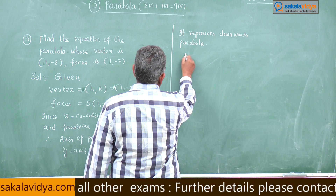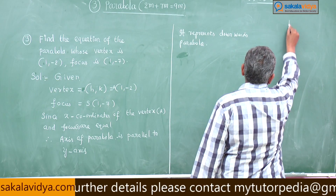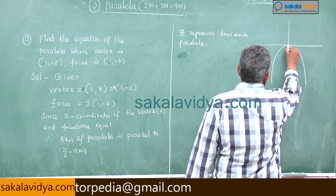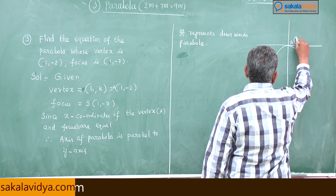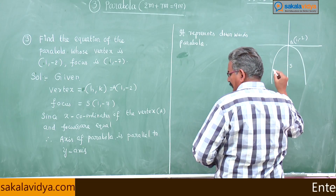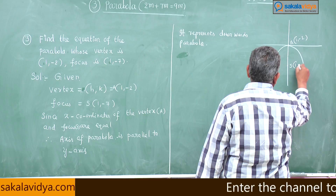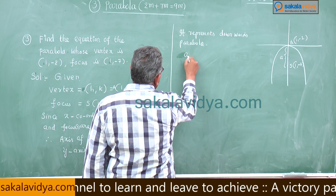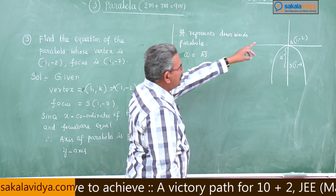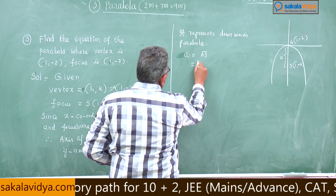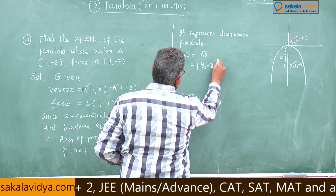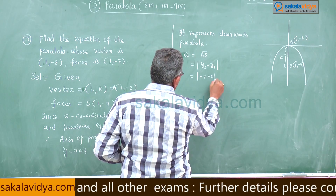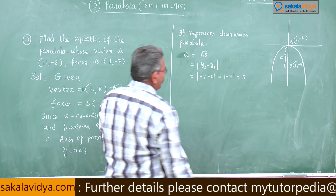We need to find a, the distance between vertex A and focus S. Since the x-coordinates are equal, the distance is given by |y₂ − y₁| = |−7 − (−2)| = |−5| = 5. Therefore a = 5.